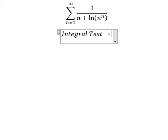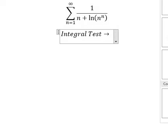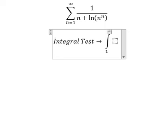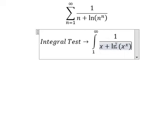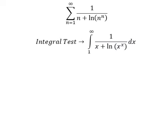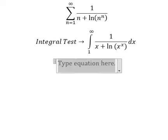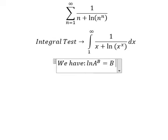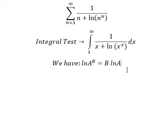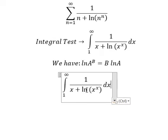We need to convert this series into an integral form. Now we have the formula here, using ln(A^B) = B ln(A). So we need to convert this expression into this form.